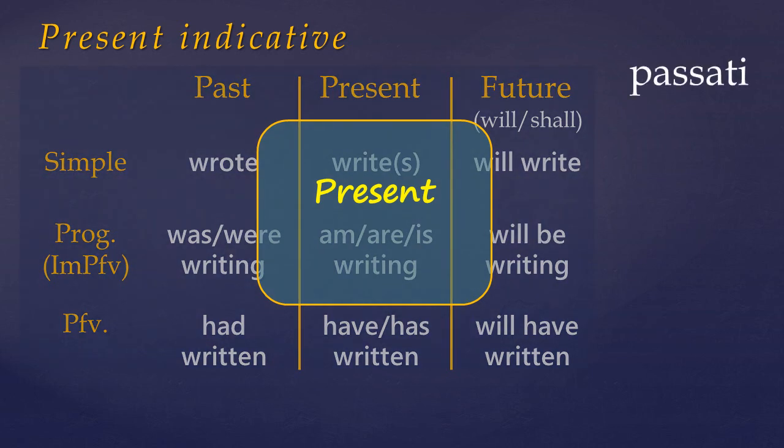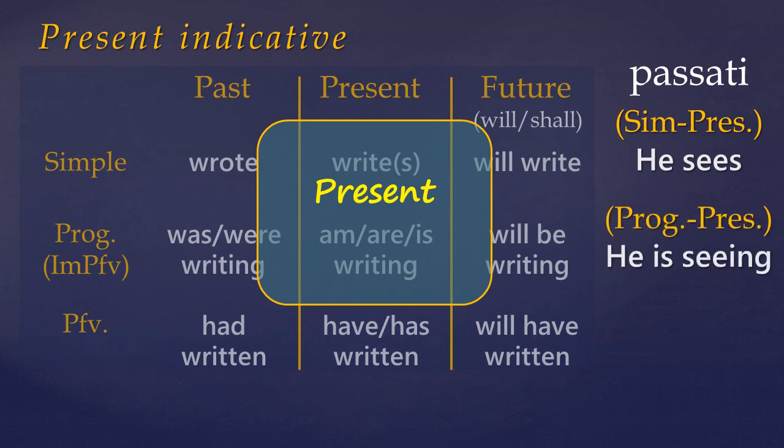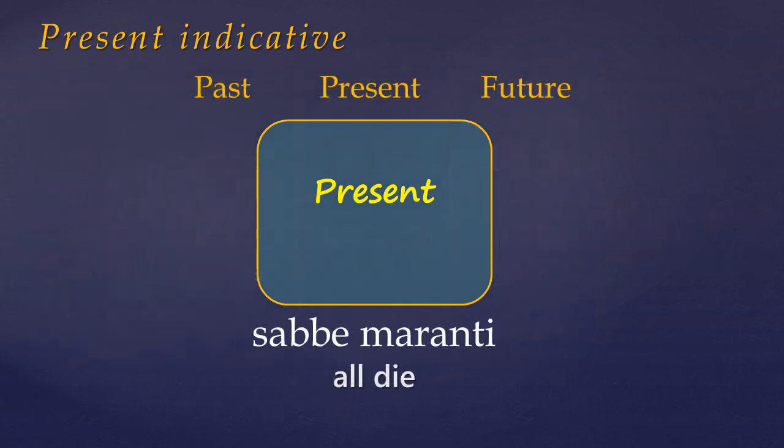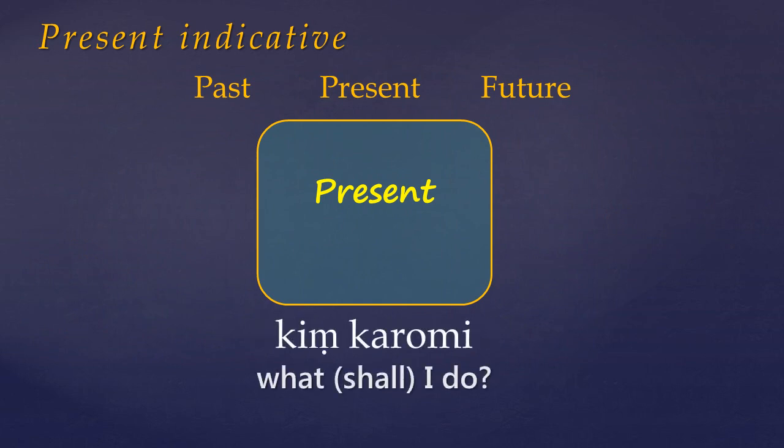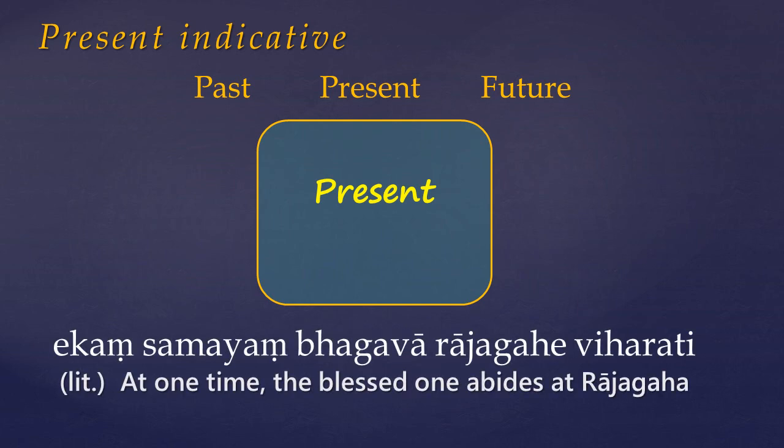So for example, the verb passati can mean either he sees, which is simple present, or he is seeing, which is the progressive present. The present is used for timeless statements, like eternal truths, and occasionally with the immediate future. Also the present indicative tense is frequently used in narration when recounting past events as if they were actually happening in the present. And this often gets called the historic present. Quite often a passage will begin with an adverbial phrase indicating a time or frequency, with the following statements then expressed in the present, rather than in the past tense as one might expect.